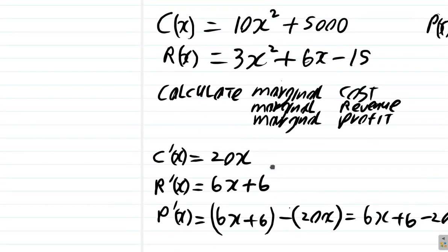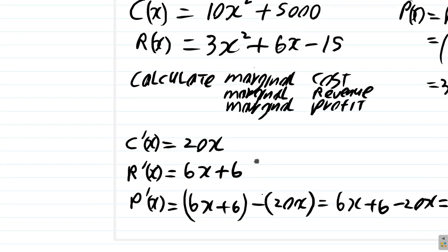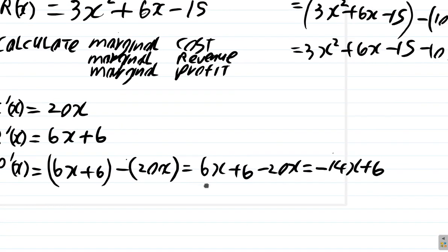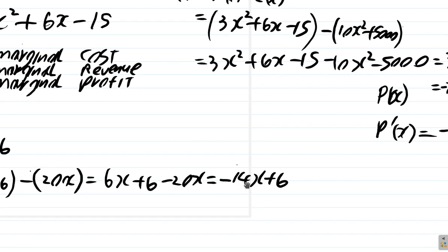We found, using differentiation, that we differentiated the total cost to find the marginal cost. We differentiated the total revenue to find the marginal revenue. And then subtracted the marginal cost from the marginal revenue to find the marginal profit. We didn't bother finding the total profit because the question didn't ask us to.